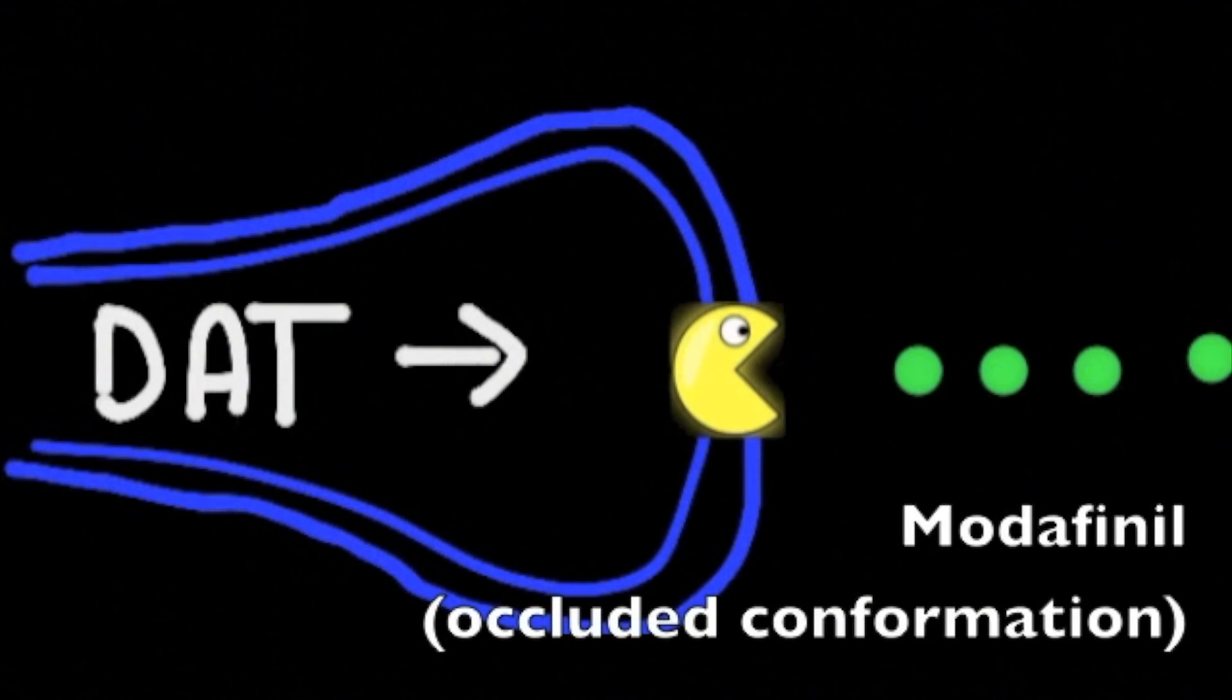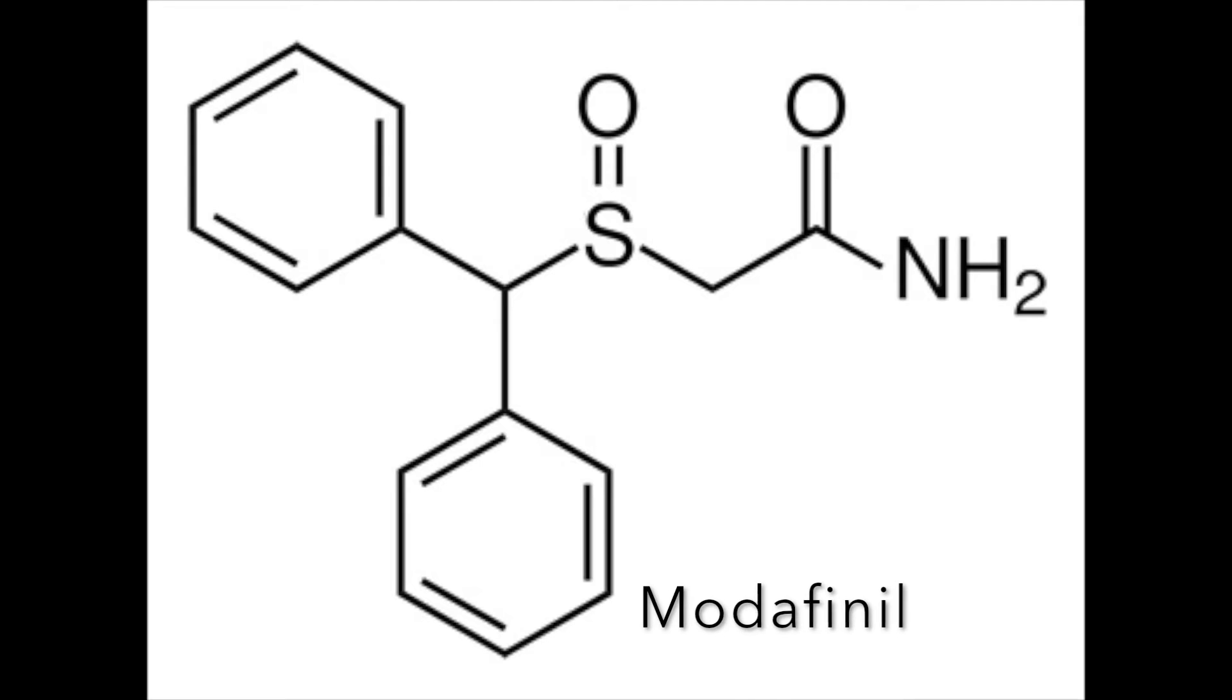Modafinil is found to prefer a more occluded conformation of the DAT. This may be in part because modafinil chemically resembles the structure of benztropines more than cocaine due to its two phenyl groups.